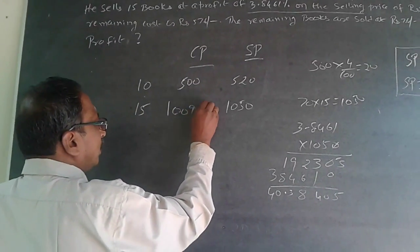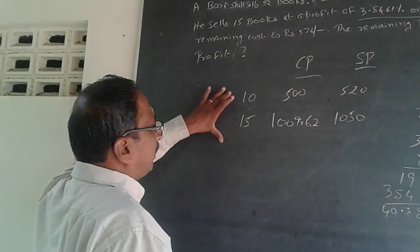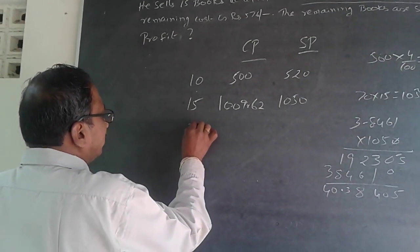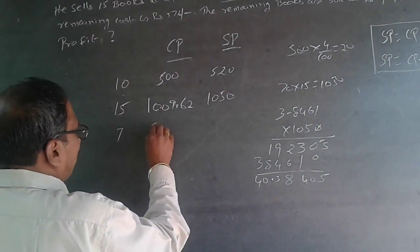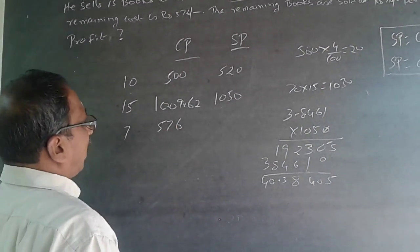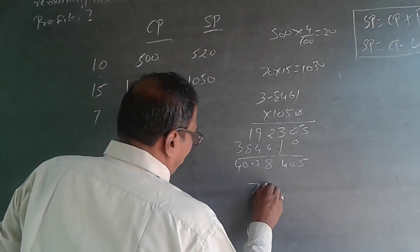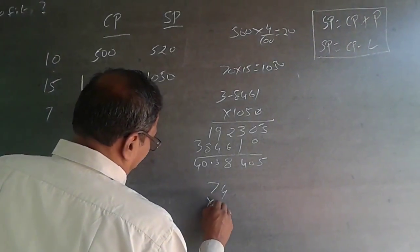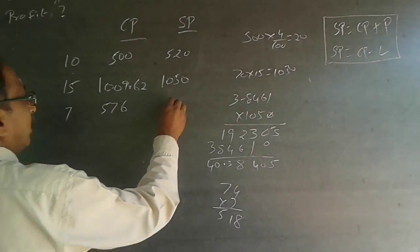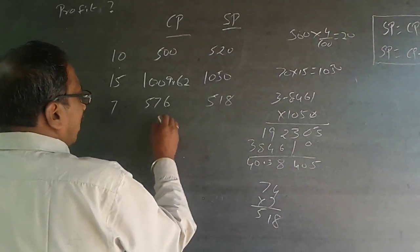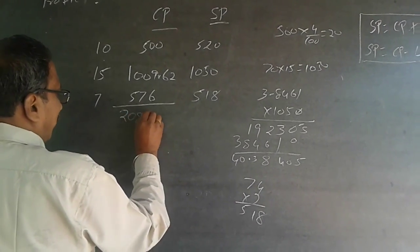The remaining books are only 7 books. The cost price of these remaining books is given as Rs. 576. He is selling each book at Rs. 74, so 74 × 7 = Rs. 518. Therefore the selling price of the remaining 7 books is Rs. 518.